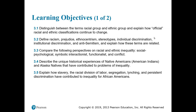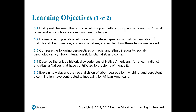By the time we are done with Chapter 3, you'll be able to do the following: distinguish between the terms racial group and ethnic group and explain how official racial and ethnic classifications continue to change. Define racism, prejudice, ethnocentrism, stereotypes, individual discrimination, institutional discrimination, and anti-Semitism, and explain how these terms are related.